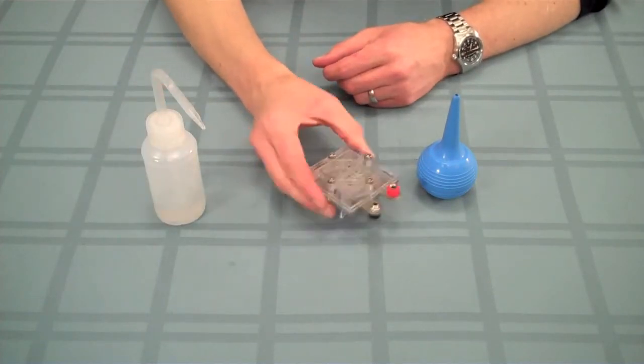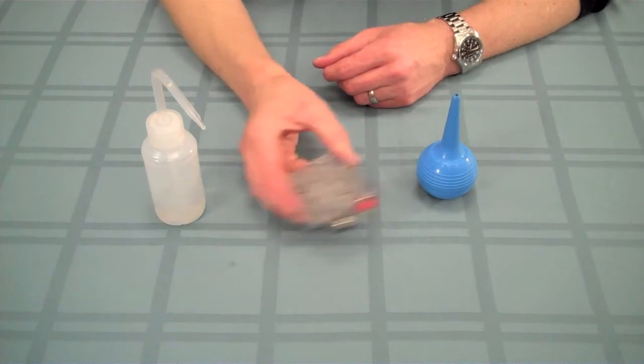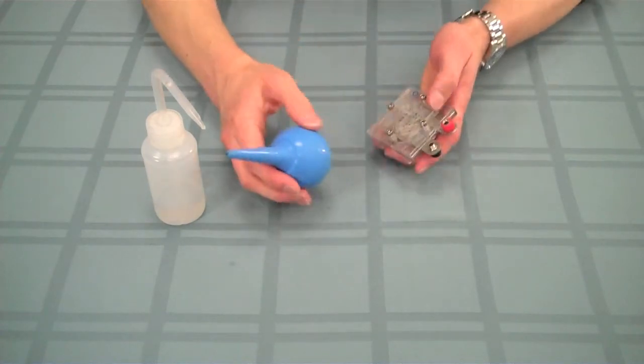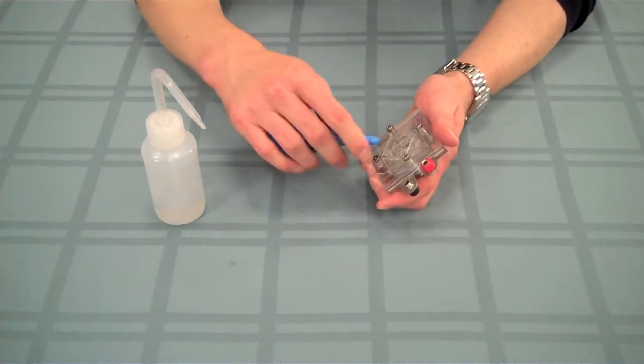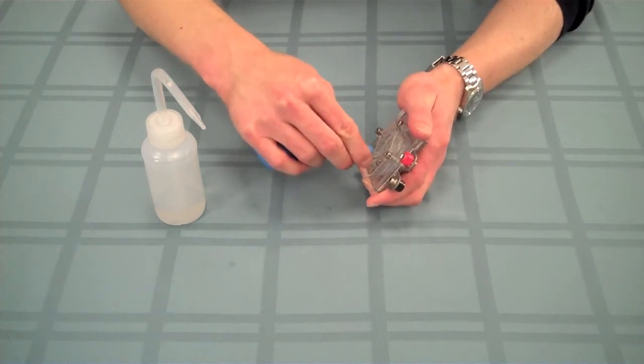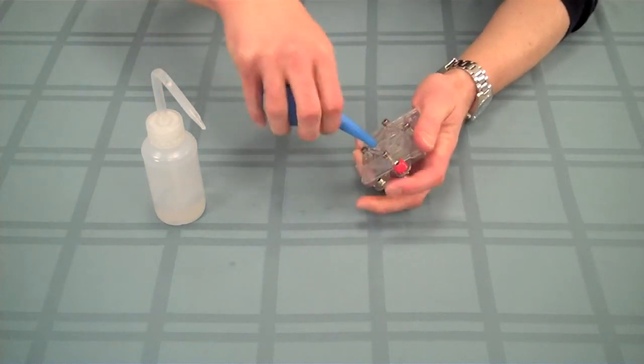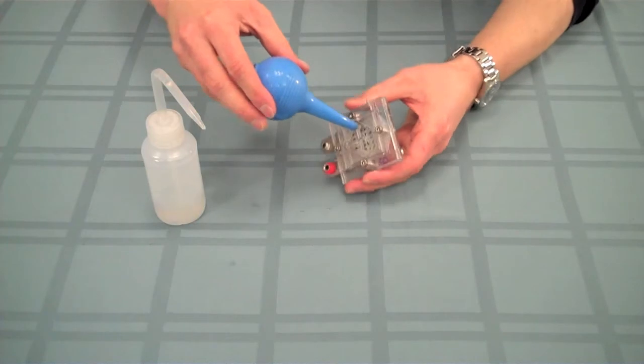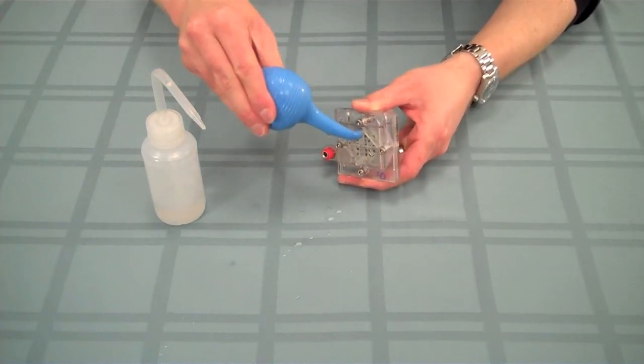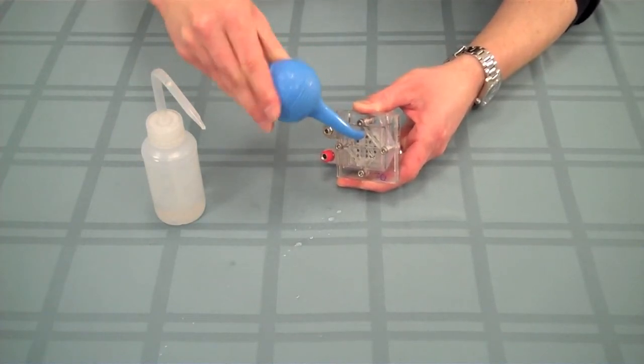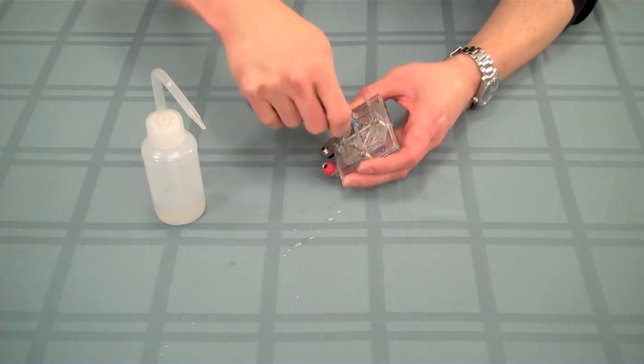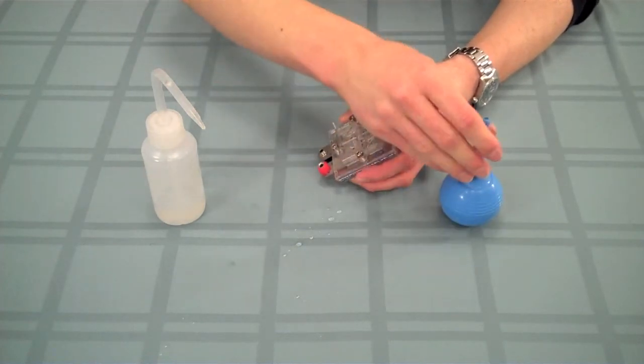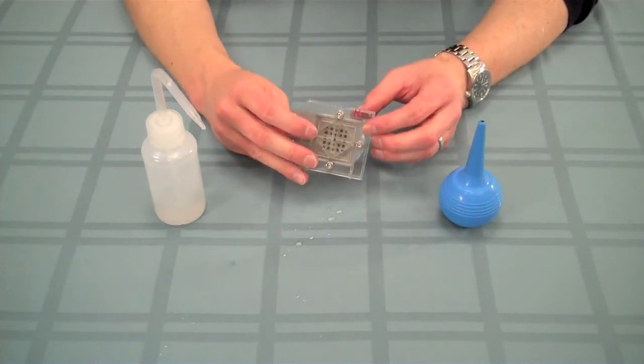Shake the fuel cell around to distribute the water inside. Then, take the ear syringe and insert one of the ports on the fuel cell into the end of the ear syringe. Now squeeze the ear syringe to blow out any excess water. Perform the same procedure on the other side of the fuel cell as well to rehydrate it.